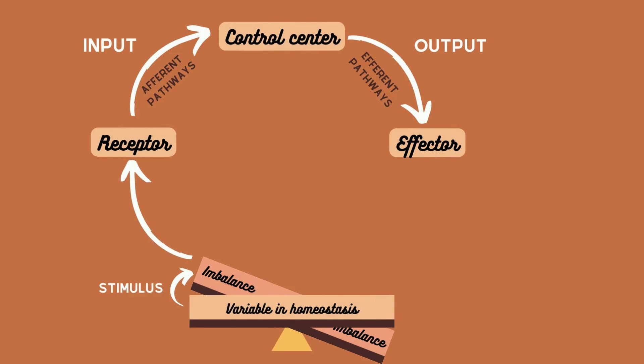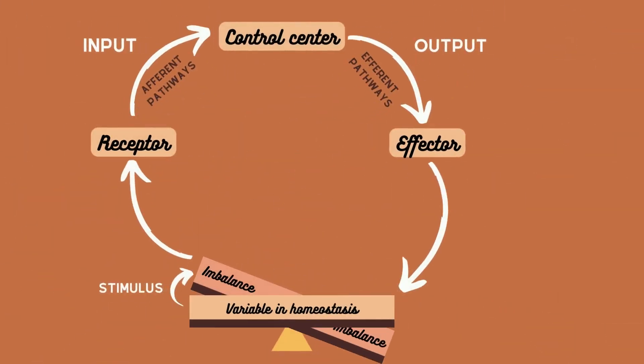In the case of stepping on a toy, the muscles of the leg will contract and lift the foot off the toy. The response of the effector should bring back the variable into homeostasis. However, sometimes it does not, and this is when we start having problems.